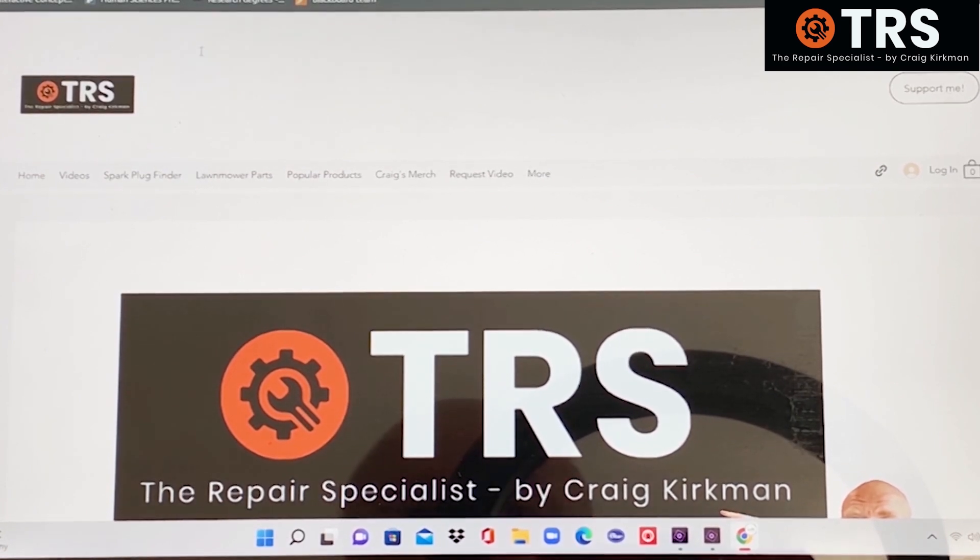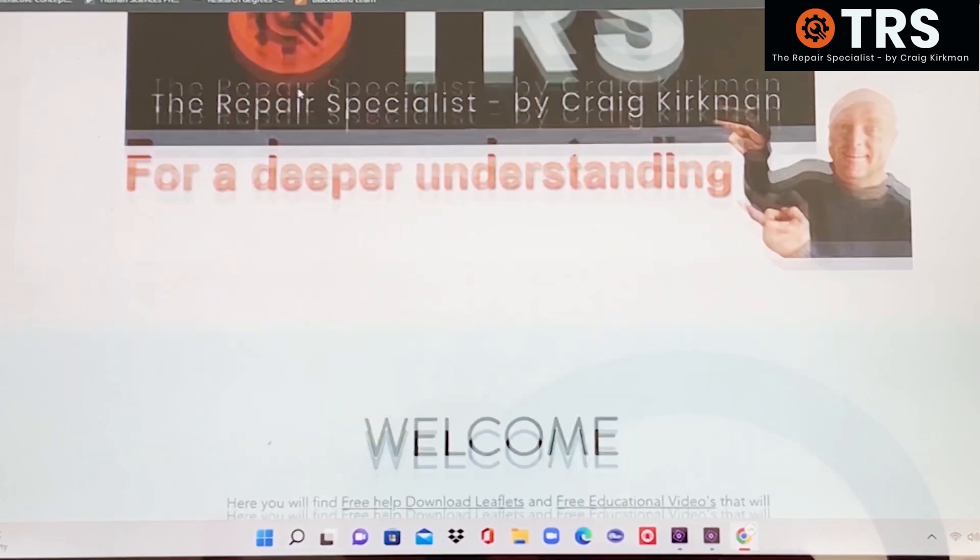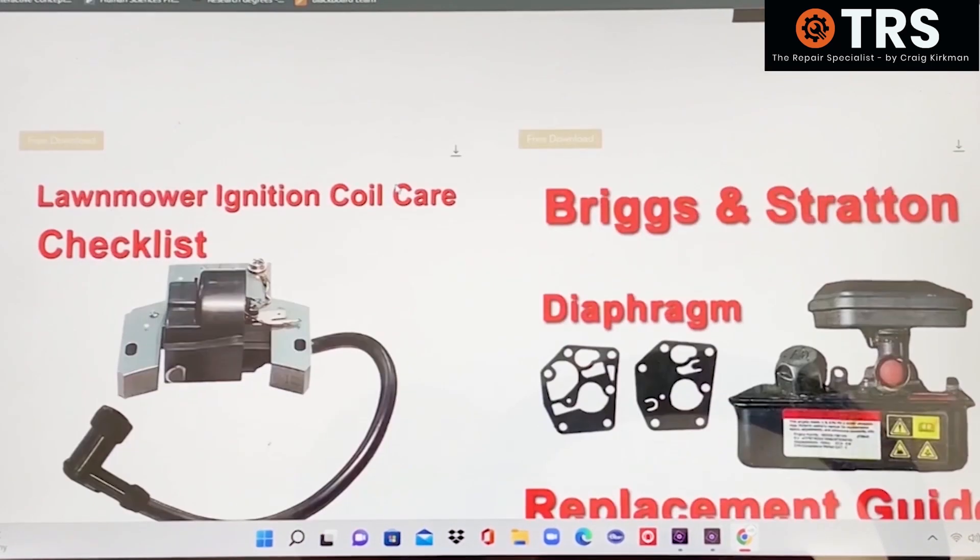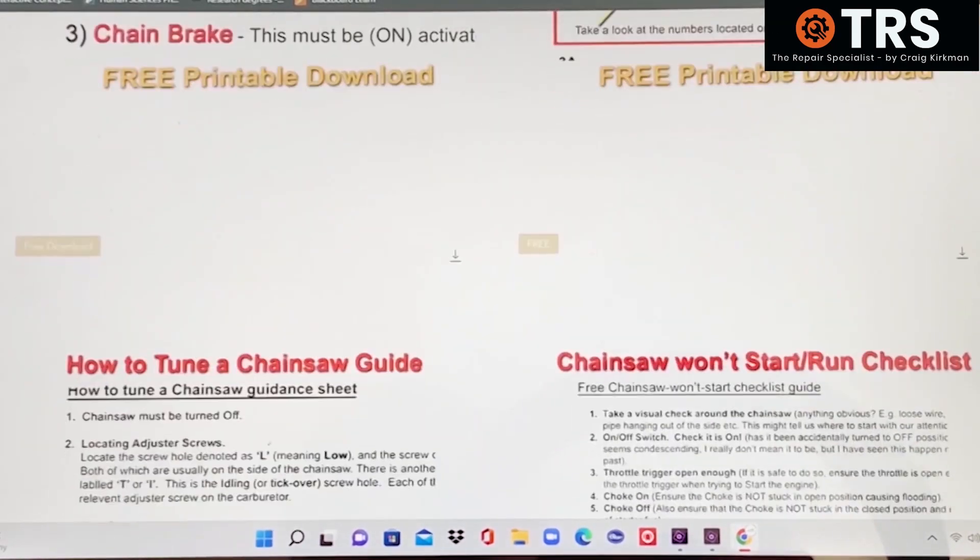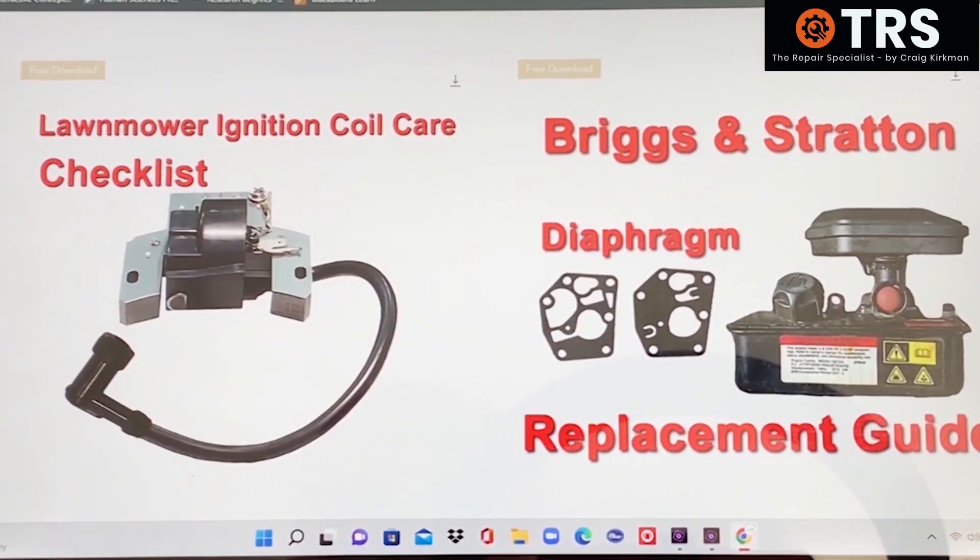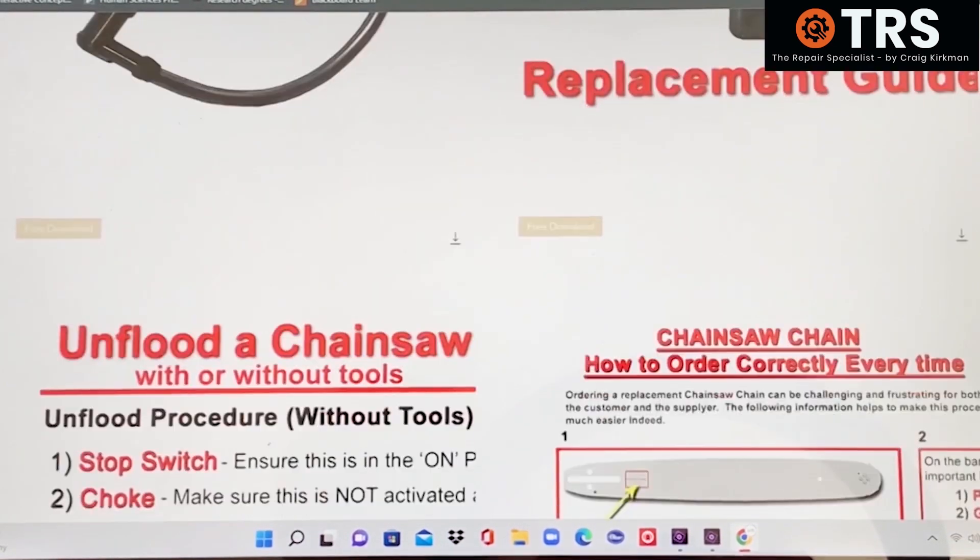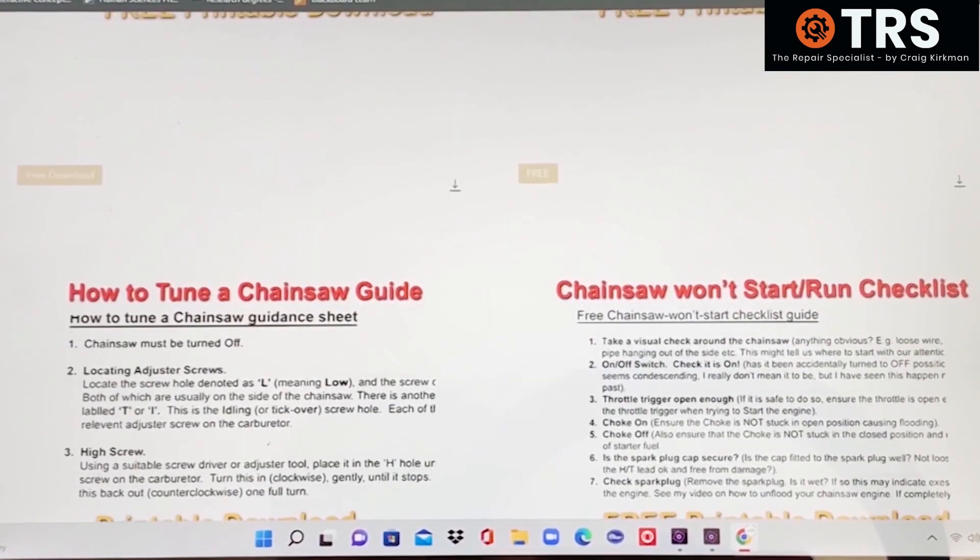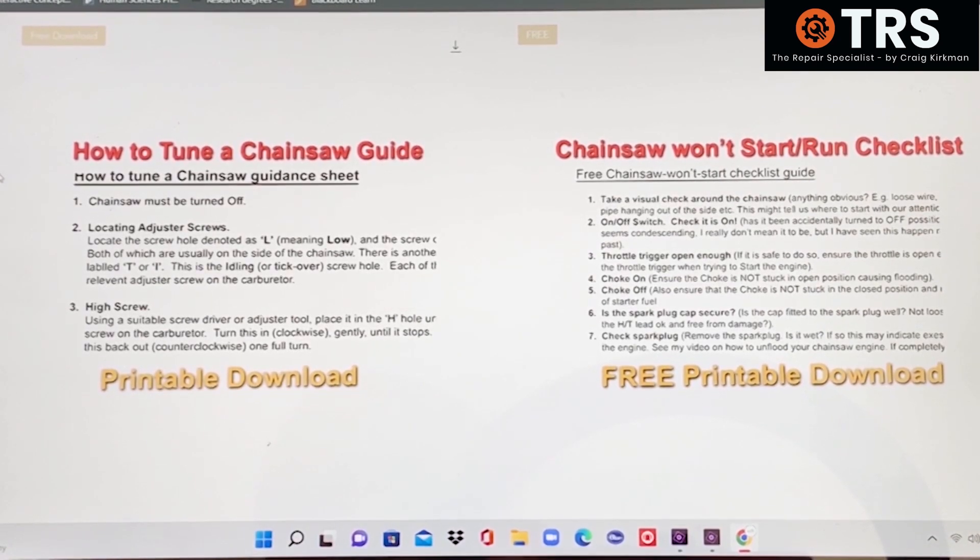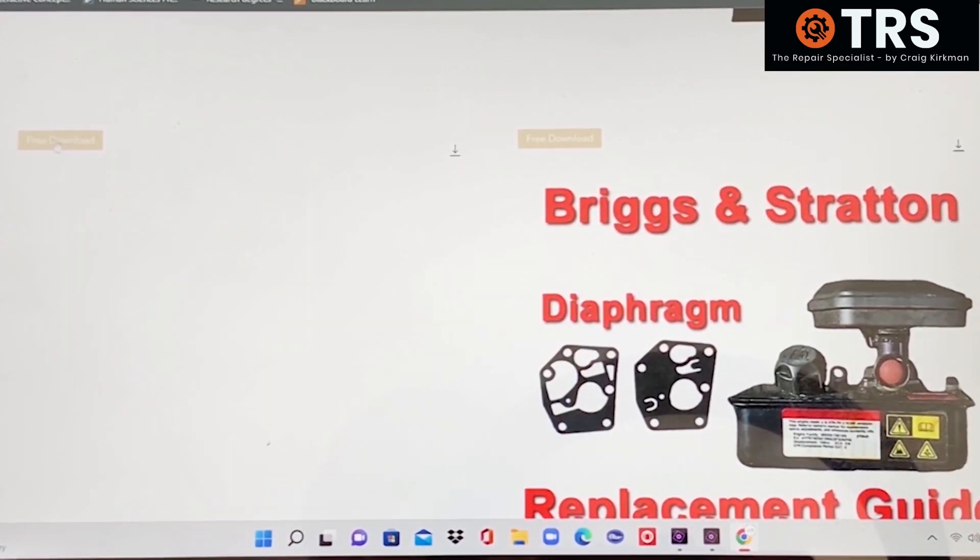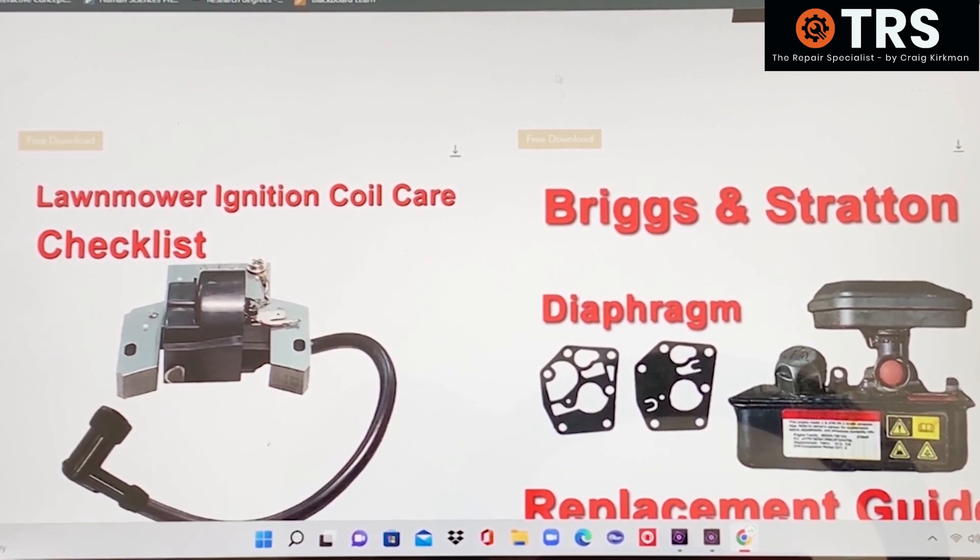So don't forget to take advantage of the RepairSpecialistOnline.com website where from the landing page you can click the free printable downloads button onto the download page. I've got six free downloads here. The best of them are that they're printable and you can take them into your workspace with you. They're on several different topics: lawnmower ignition coil care checklist, Briggs & Stratton diaphragm replacement guide, unflood your chainsaw without or with tools, how to order the correct chain every time for your chainsaw, how to tune a chainsaw guide, and chainsaw won't run. As I've said, they're absolutely free and the download buttons are in the gold.